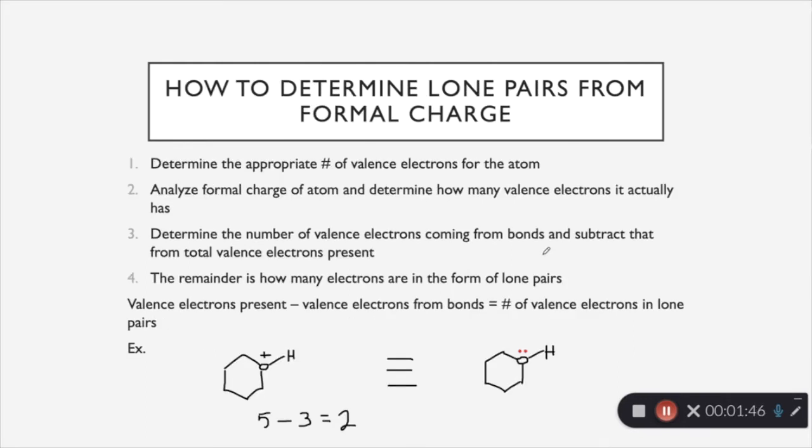So the first step is to determine the number of valence electrons that atom would normally have as a neutral atom. We have an example down here that we're going to work through. This oxygen has a positive charge. Oxygen, if you look at the periodic table, wants to have six valence electrons, but this positive charge is showing us that it does not have six valence electrons. Because it's a positive one charge, we know that oxygen is missing one valence electron. Therefore this oxygen here has five valence electrons, not six.